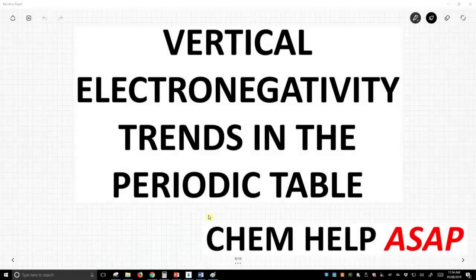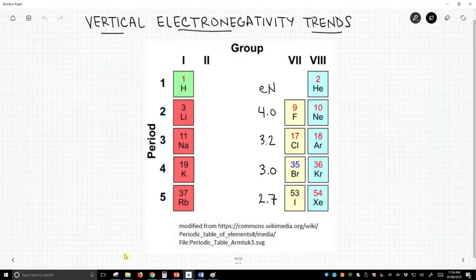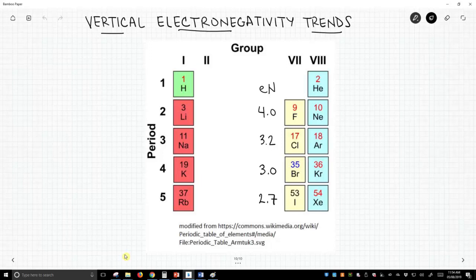Hello from Chem Help ASAP. We're going to talk about vertical trends in the periodic table. So again, we're looking at just a snippet of the periodic table. We're going to focus on group number seven.